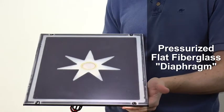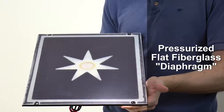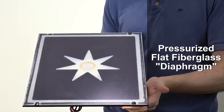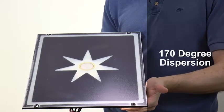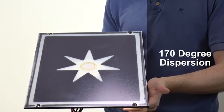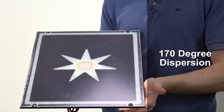Instead of a round cone, a pressurized flat fiberglass sheet acts as the diaphragm that won't shake the walls while generating superb audio. And with a 170-degree dispersion pattern, you'll need fewer speakers to cover more area in distributed audio scenarios.